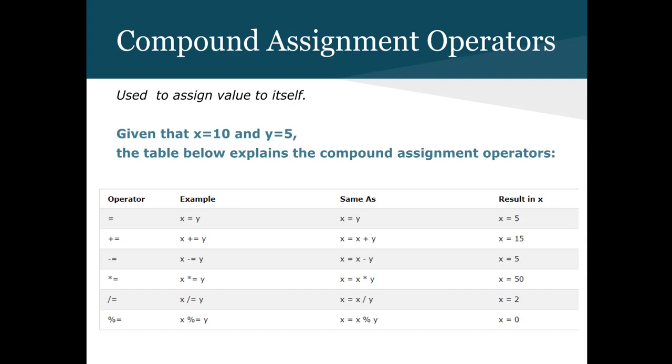Compound assignment operators are used to assign a value to itself. Given that x is 10 and y is 5, the table below explains the compound assignment operators. Our assignment operator just says, assign the value of y to x, x equals y, and then result in x is, x is now 5. Because x was 10 and then we reassigned its value to the same value as y, x is now 5. When we plus equals, we add the value of y to x. We could write that as x equals x plus y, and now the value of x would be 15 after that bit of math was done.